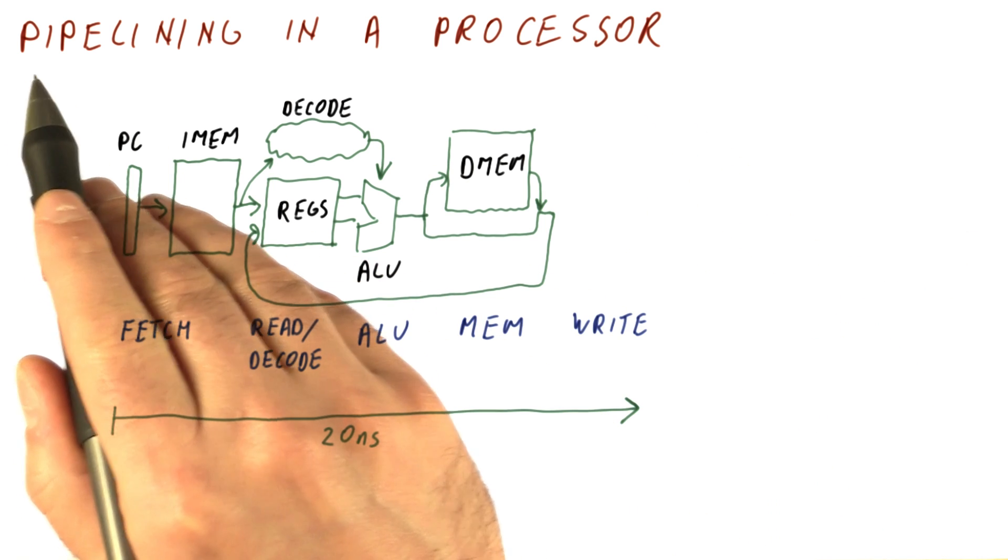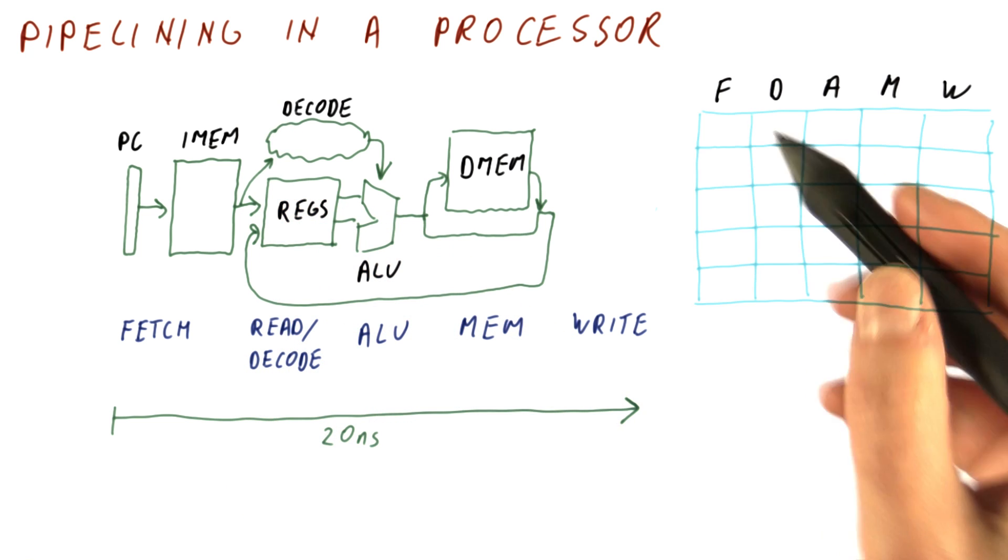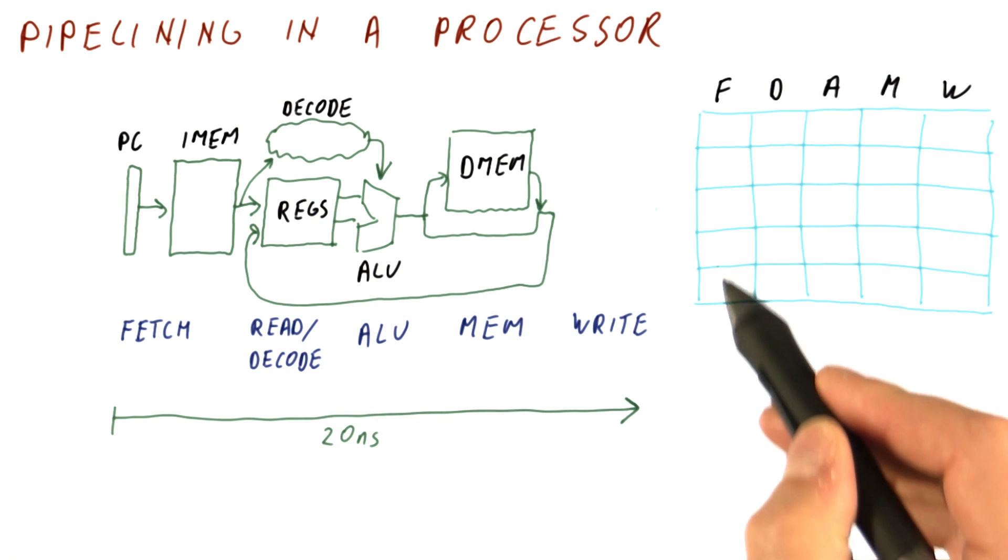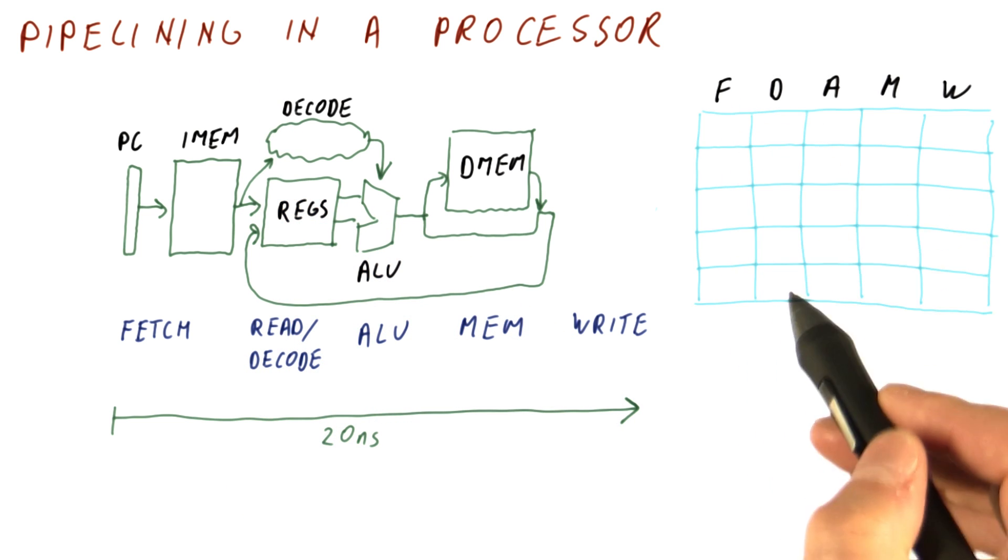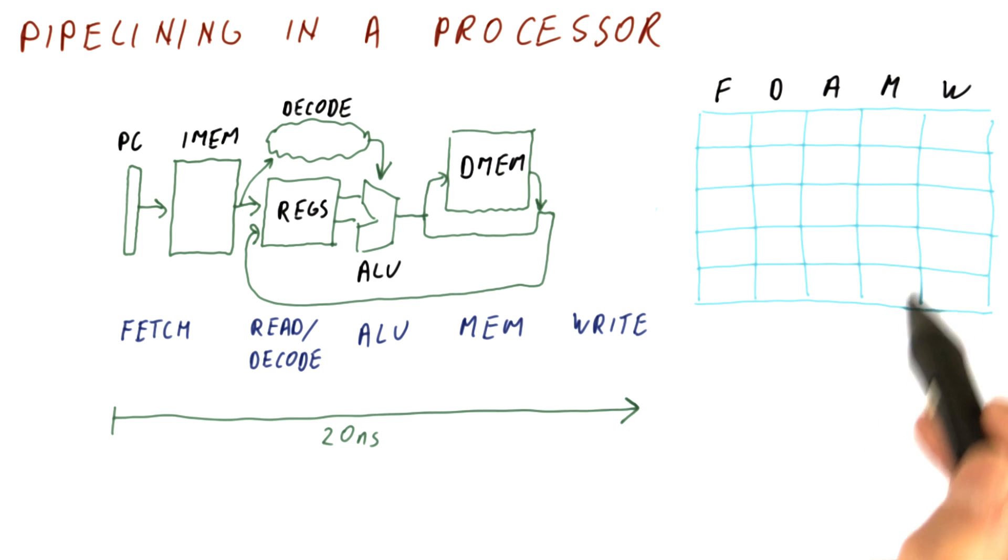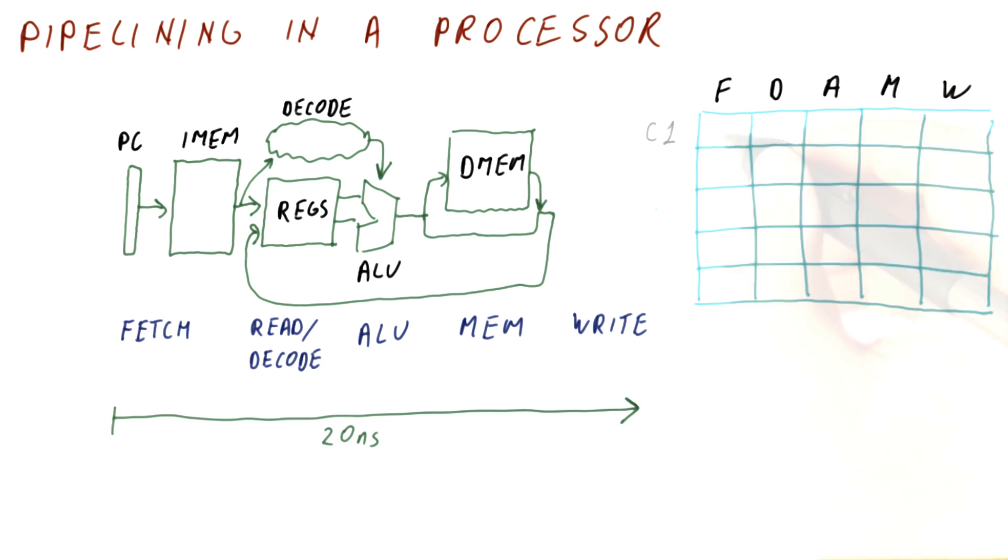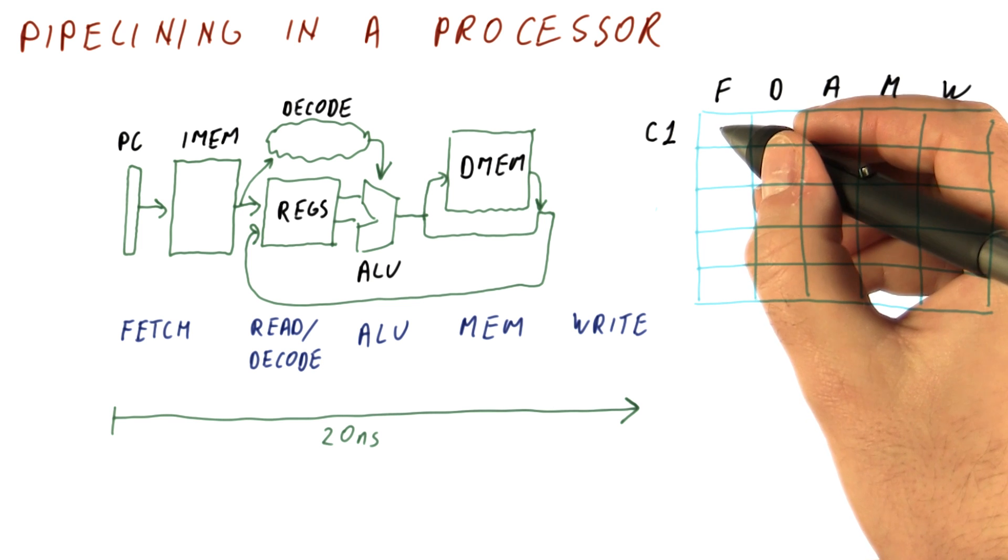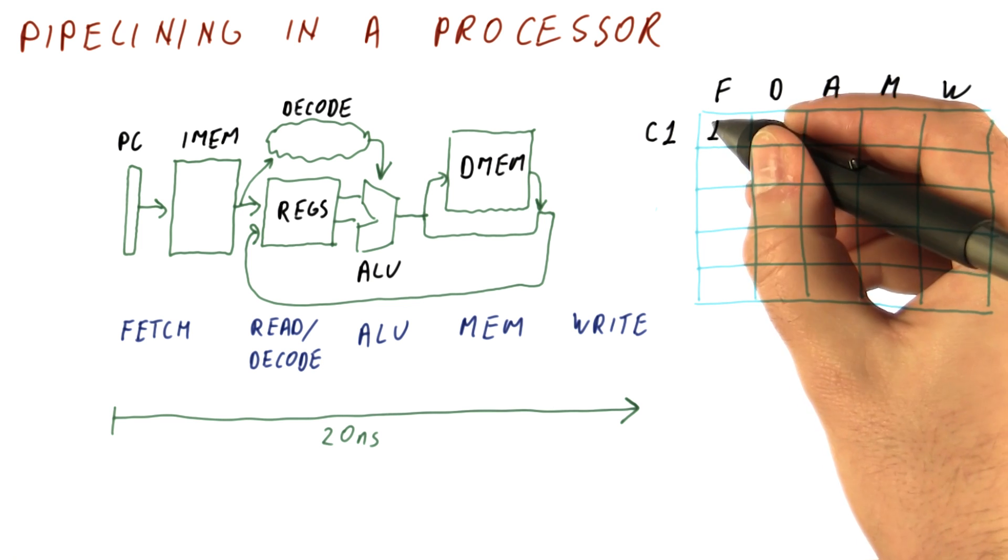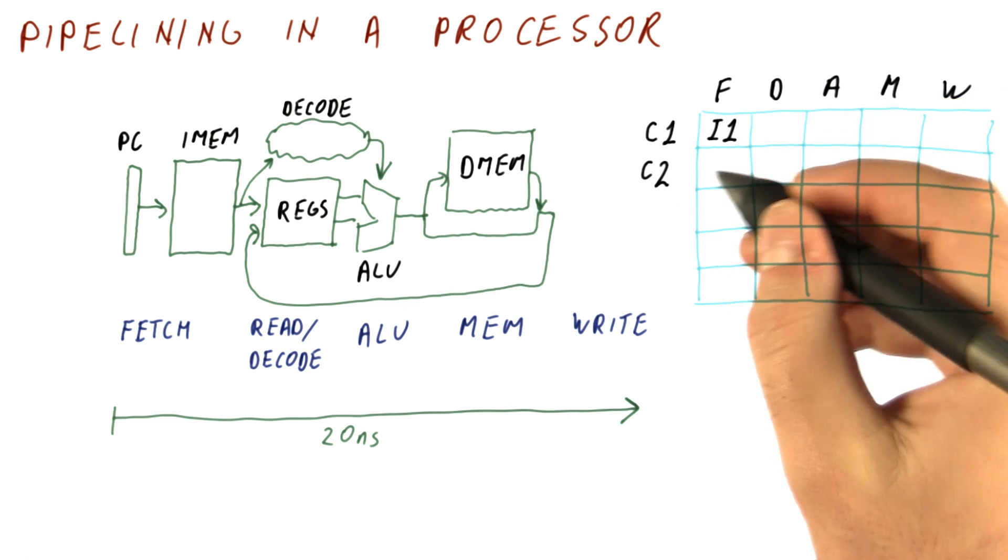So how do we apply pipelining to this? Well, the idea is that here we have our fetch, decode, ALU, memory, and write parts of this processor. Here we show what happens in cycle one: we fetch some instruction I1. In cycle two,